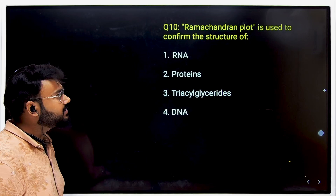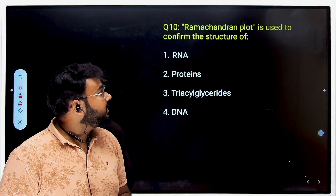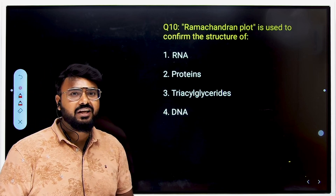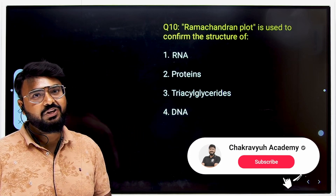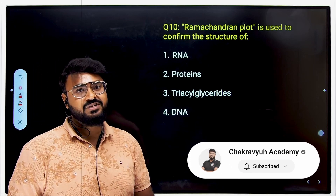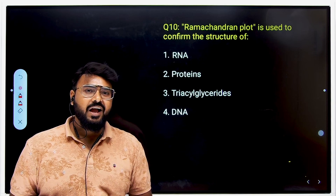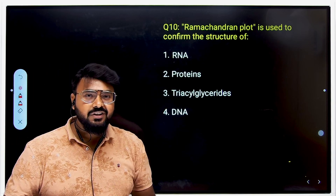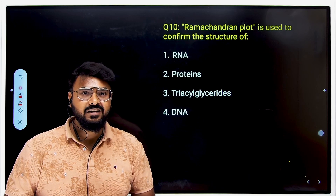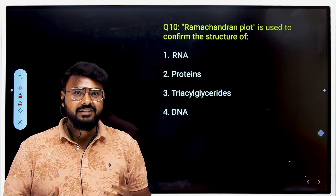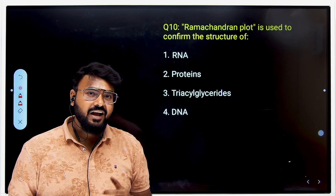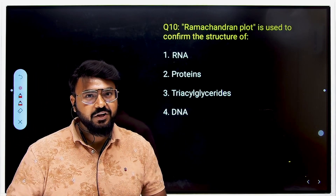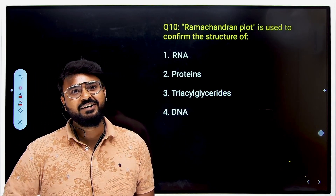The final question: the Ramachandran plot is used to confirm the structure of — RNA, protein, triacylglyceride, or DNA? This is left as an exercise — find the Ramachandran plot and the famous Indian scientist Ramachandran in your NCRT and answer in the comment box below. Keep following Chick Pea Science Academy for more such videos and share with friends who may need it.